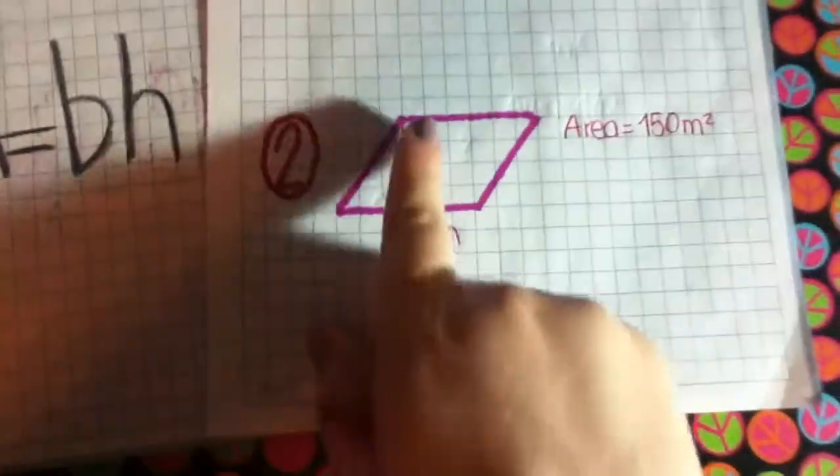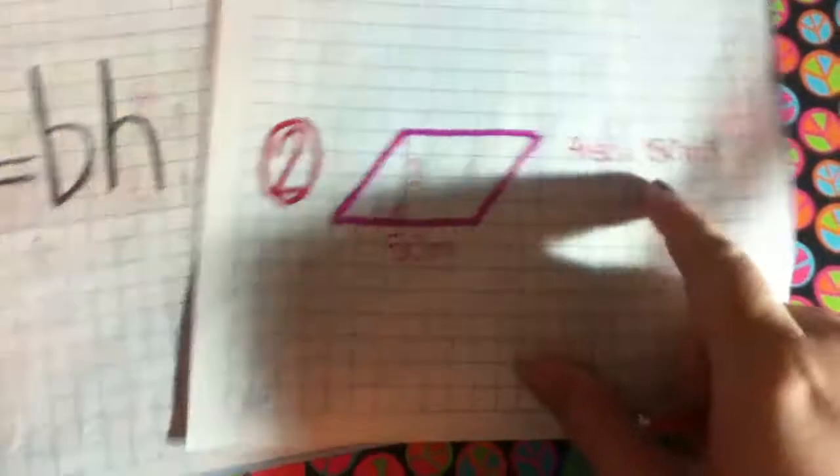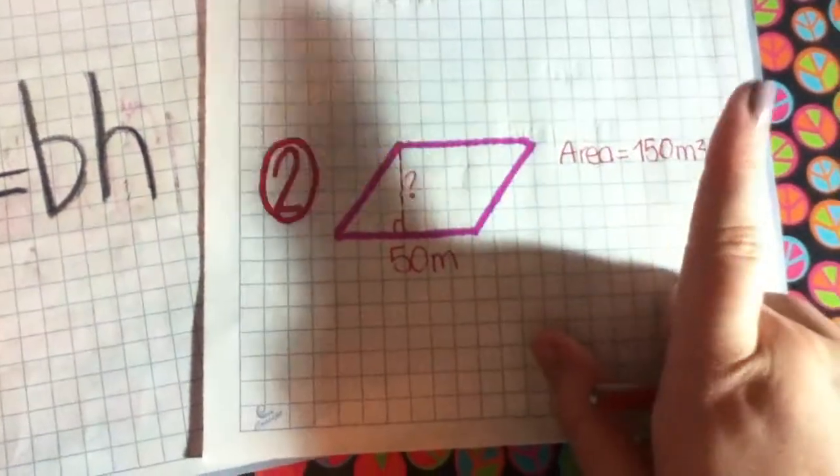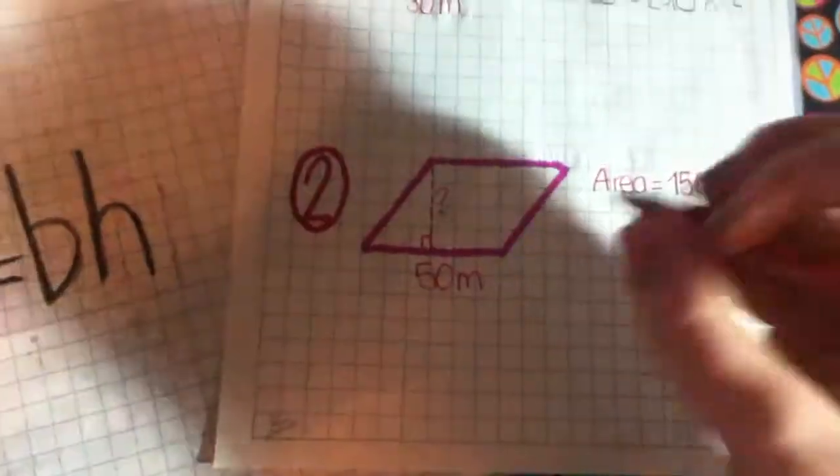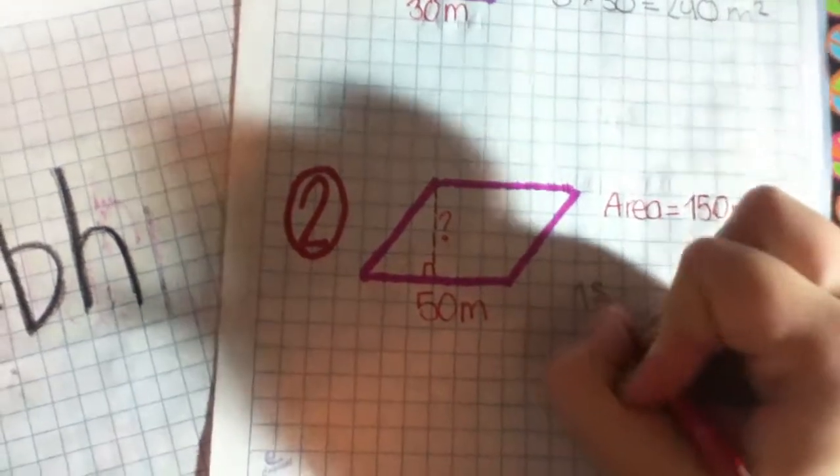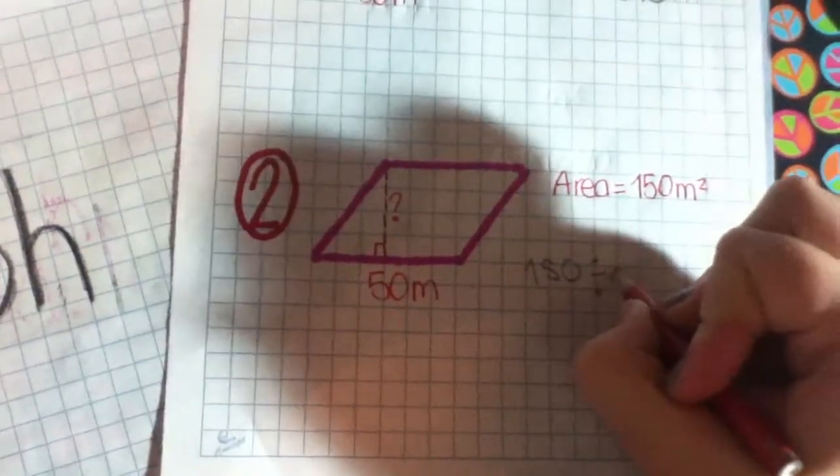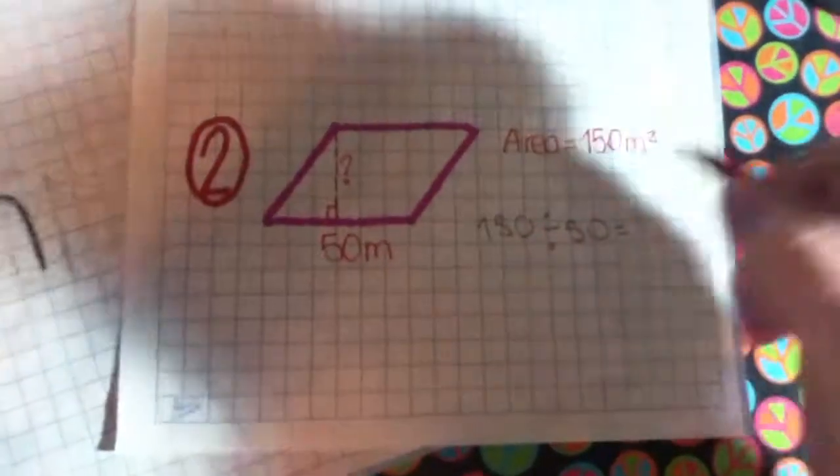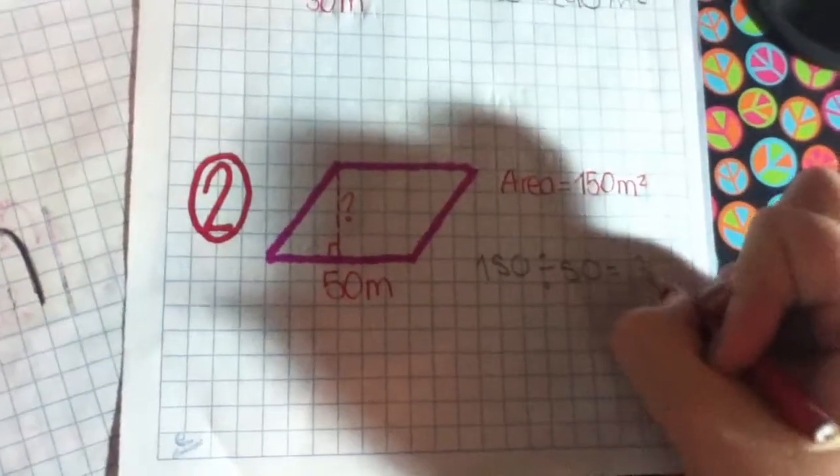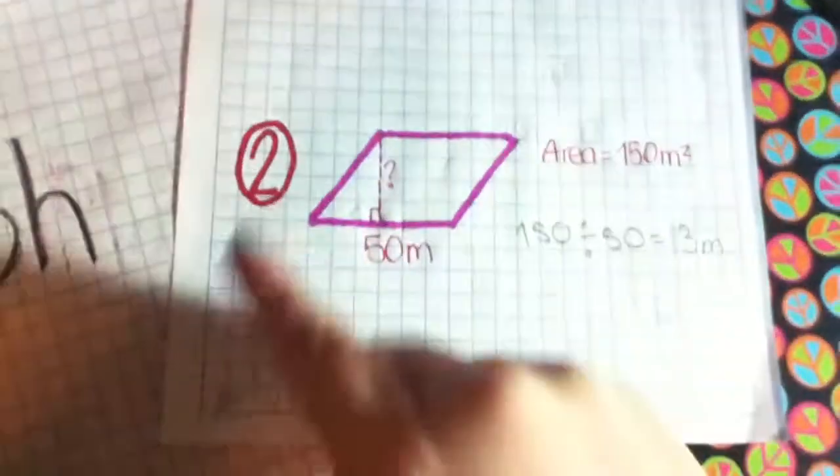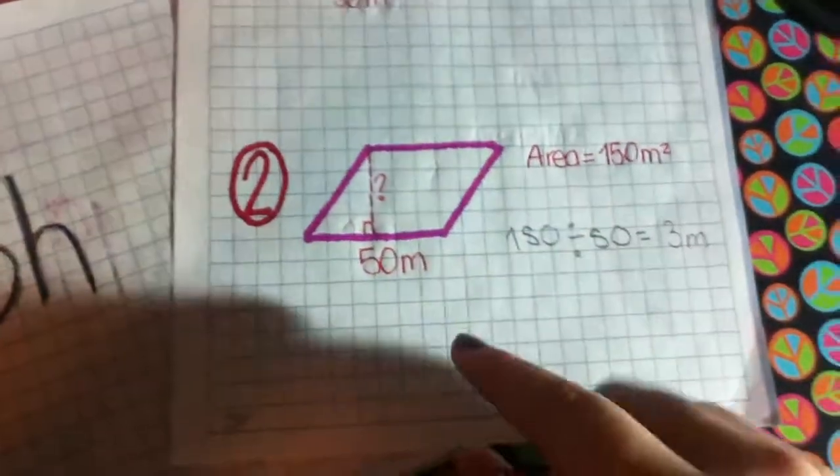Now we don't have the height, but we have the area. So we should divide this by this. Our answer is 3 meters. So the height is 3 meters.